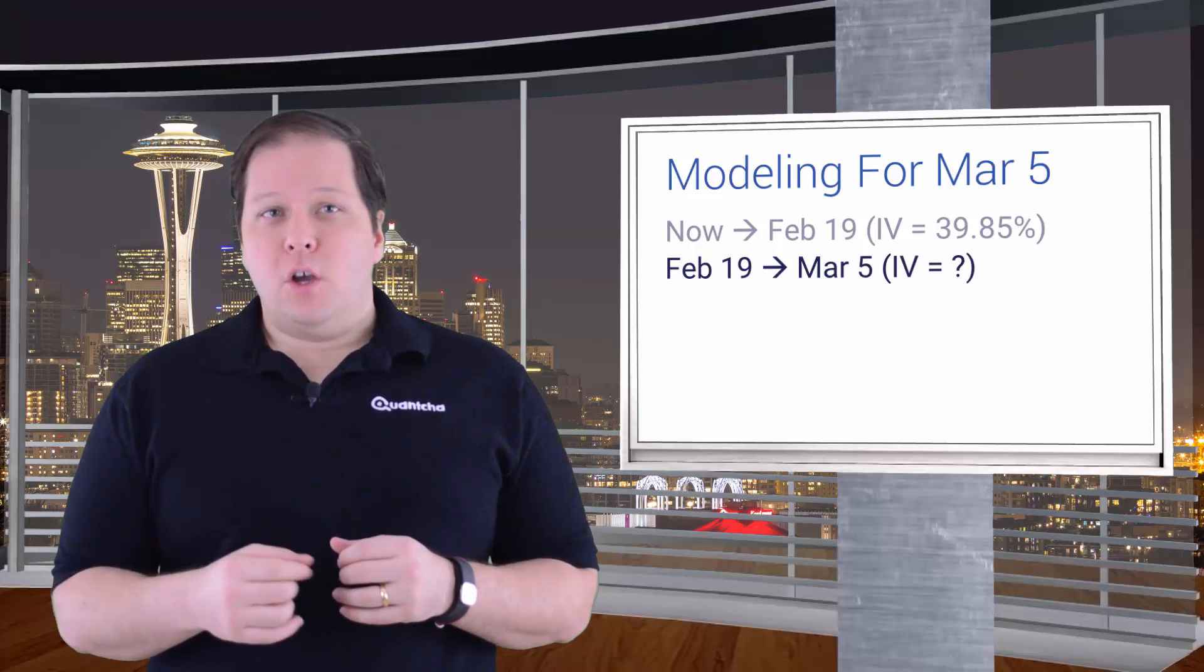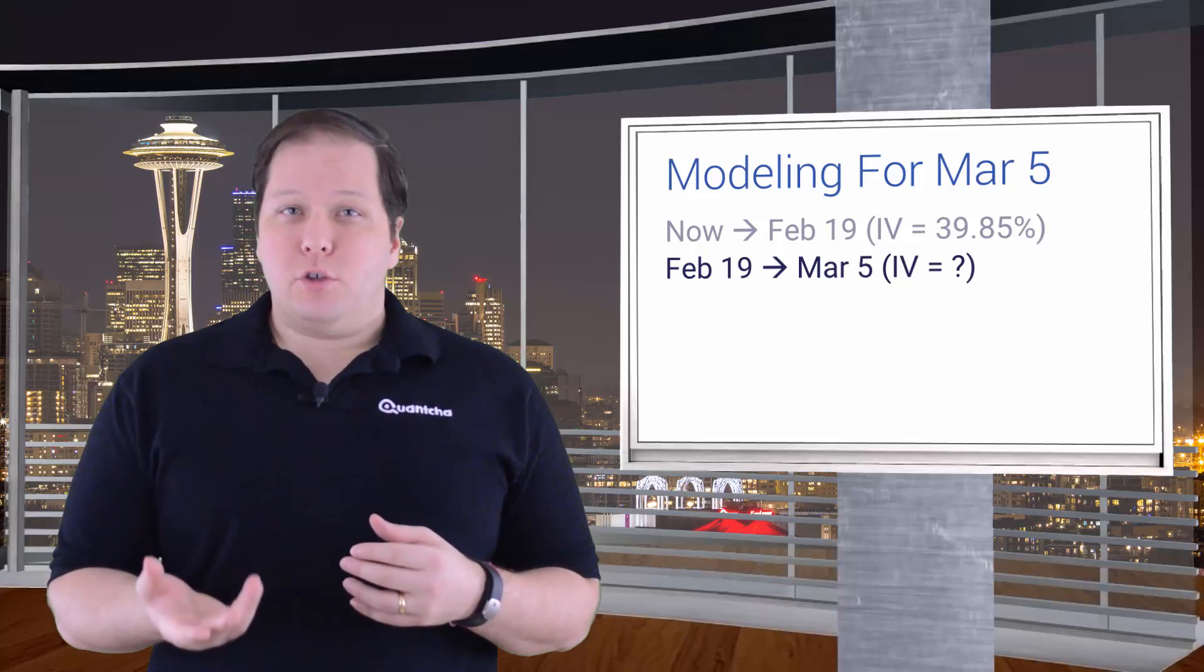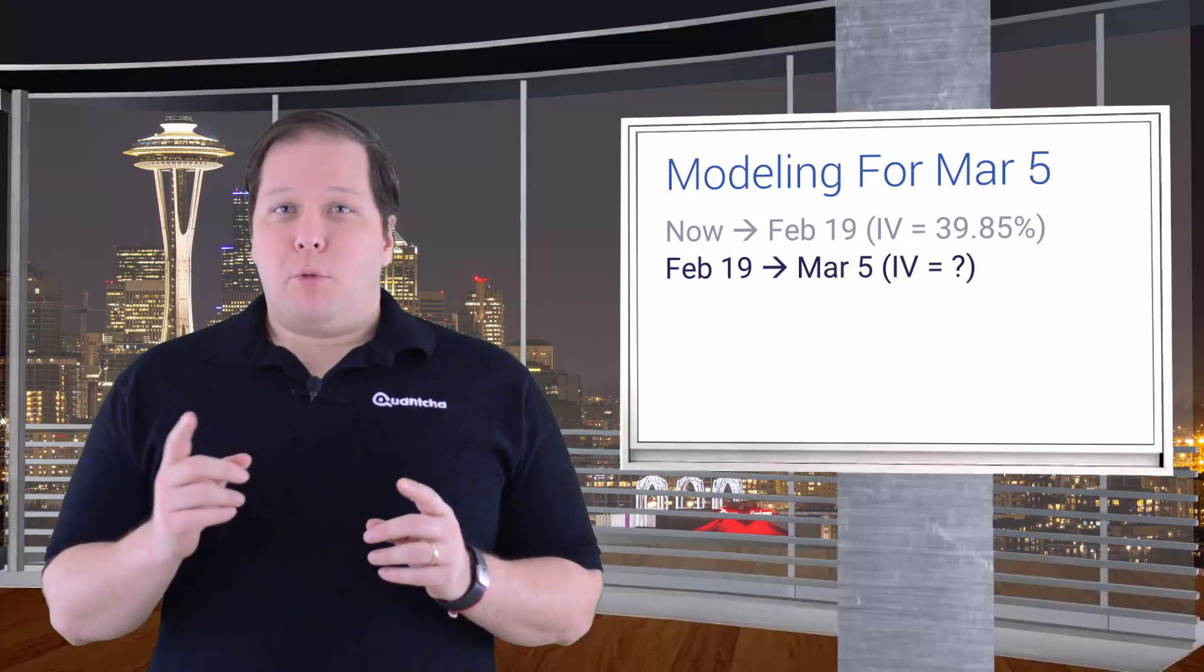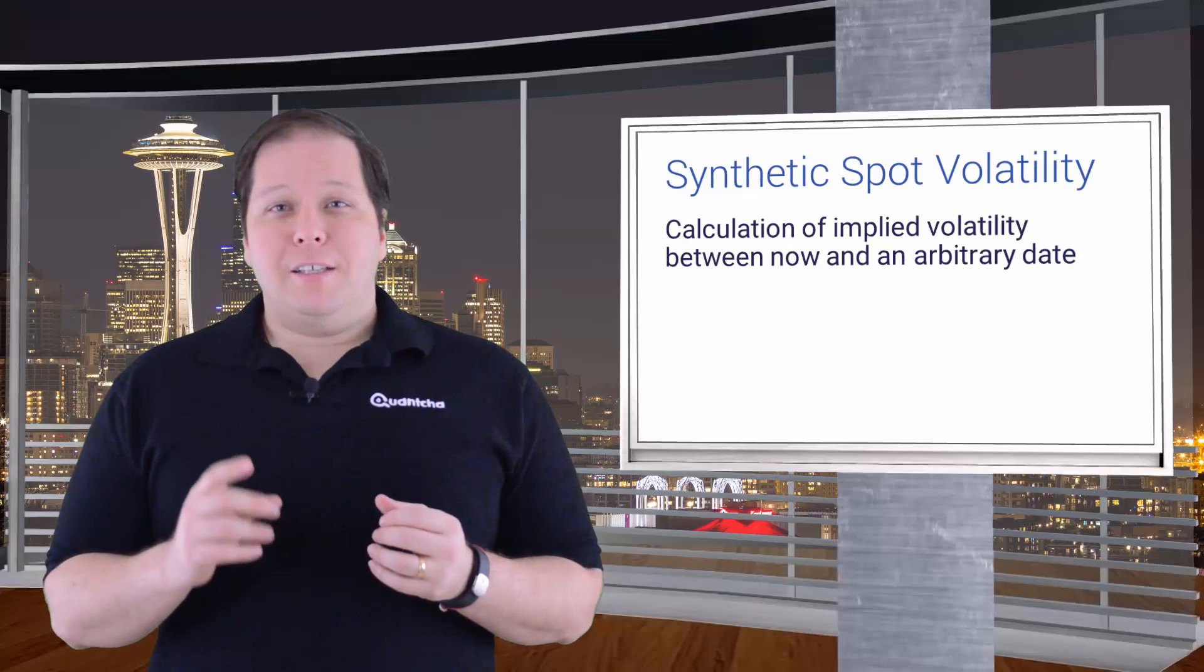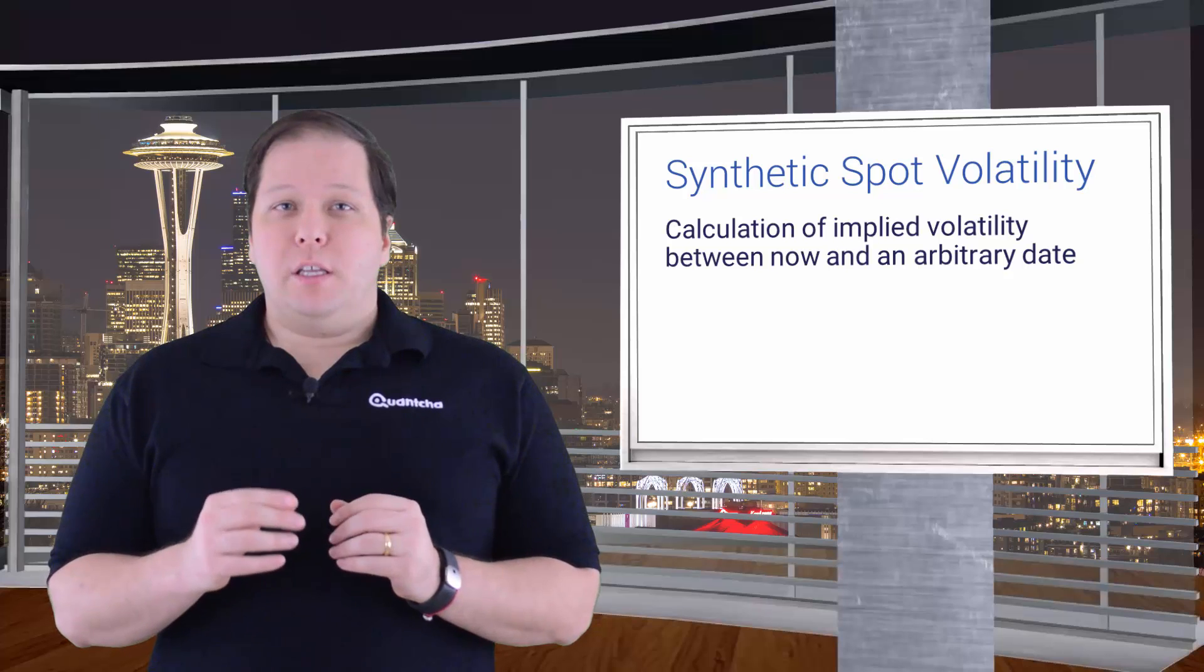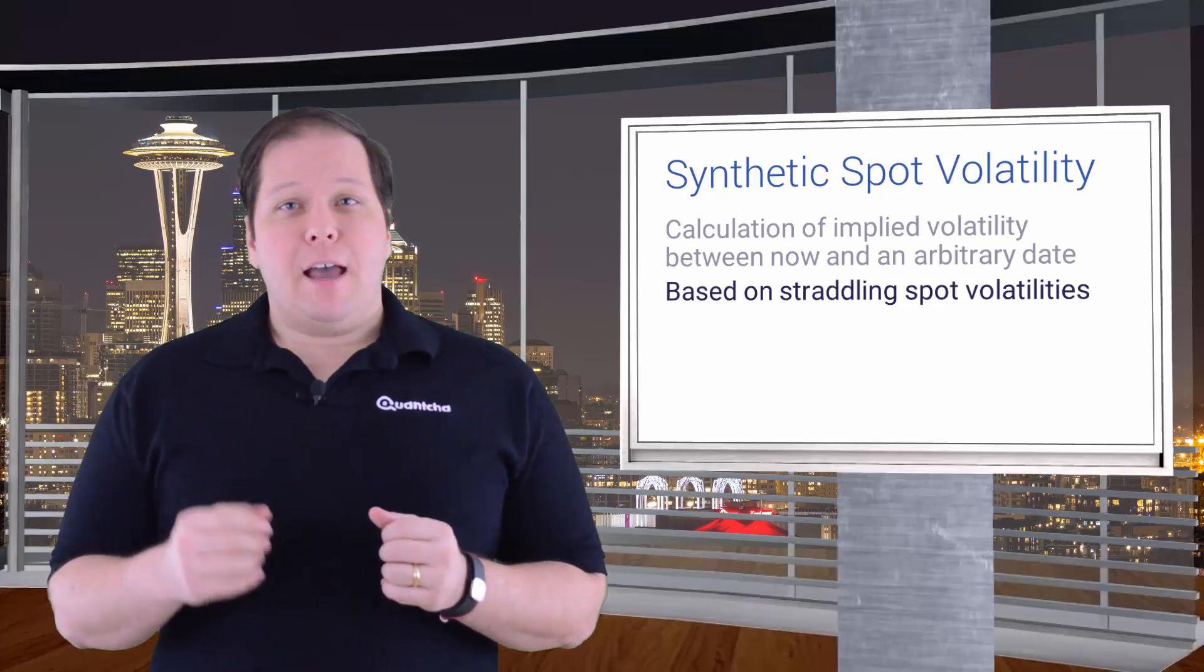However, in order to do this, we need an implied volatility for that term, so that we can generate a proper distribution. Since there aren't any options expiring on March 5th in this scenario, we need to synthetically create a spot volatility for the term. Fortunately, we have volatilities that straddle March 5th, so we can use them to calculate what we need.